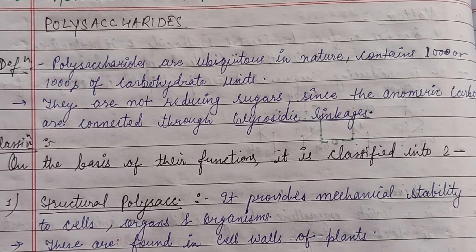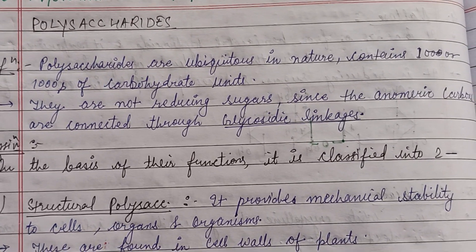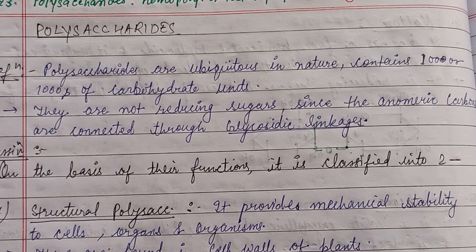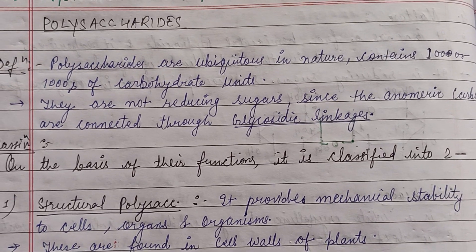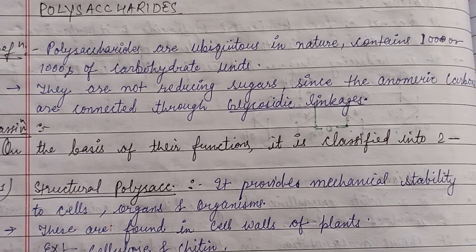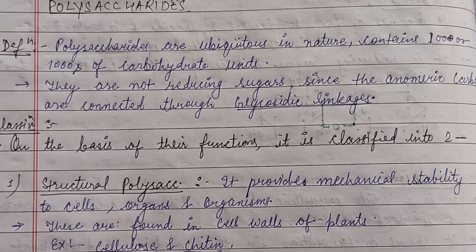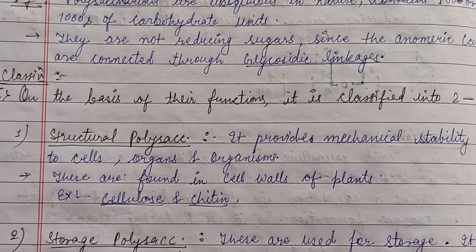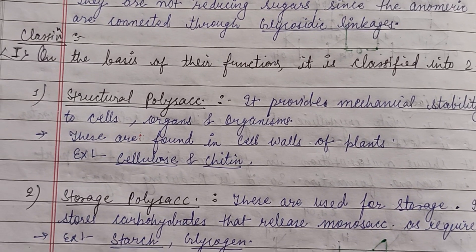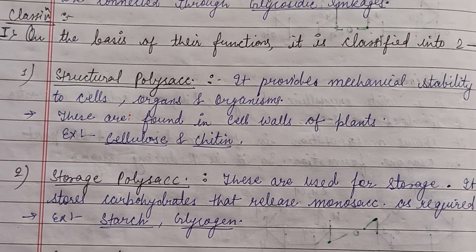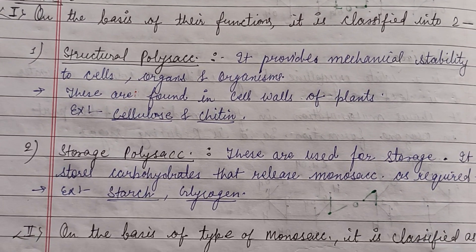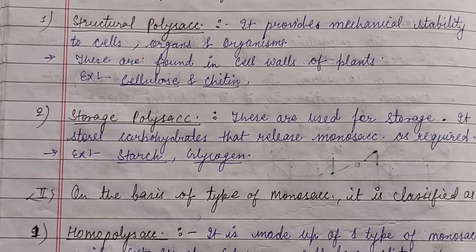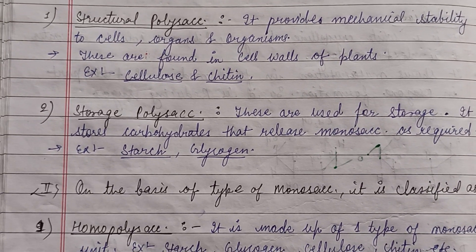Good morning, friends. This video is about polysaccharides, and we are going to see how they are classified and their types. Polysaccharides are ubiquitous in nature, containing hundreds or thousands of carbohydrate units connected through glycosidic linkage. On the basis of their function, they are classified into structural and storage polysaccharides.